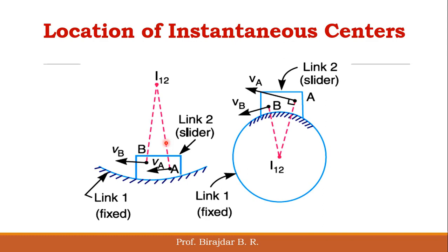When we join two links where link one has a curvilinear path and link two moves on it, the instantaneous center formed by link one and link two lies at the center of that curvilinear path. If link one is circular and link two moves on it, the instantaneous center formed by link one and link two exists at the center of link one. These are the possible conditions and locations where a particular instantaneous center will lie.